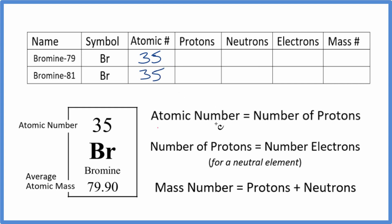For protons, the atomic number equals the number of protons by definition. So we have 35 protons.